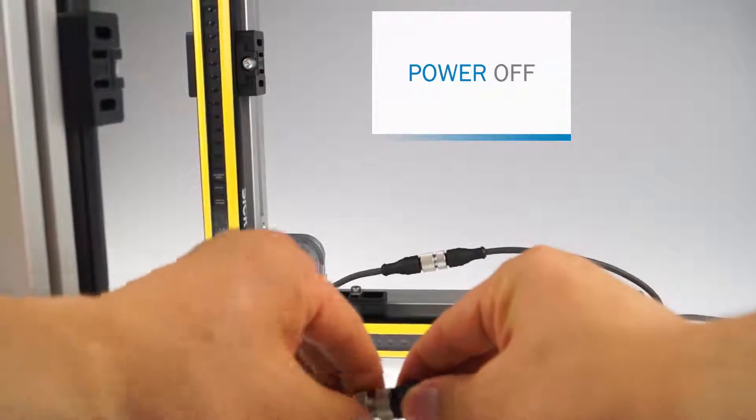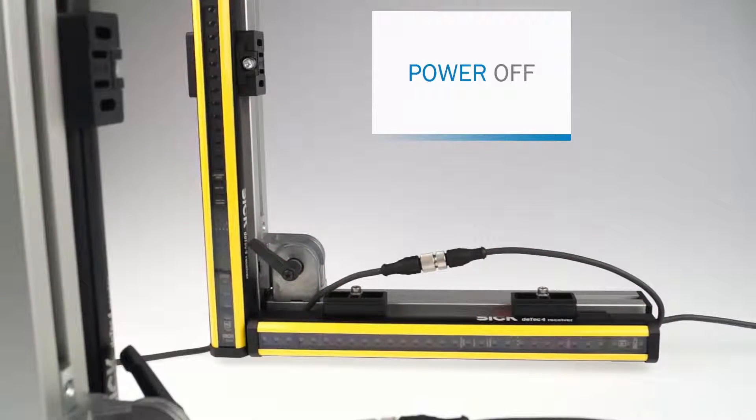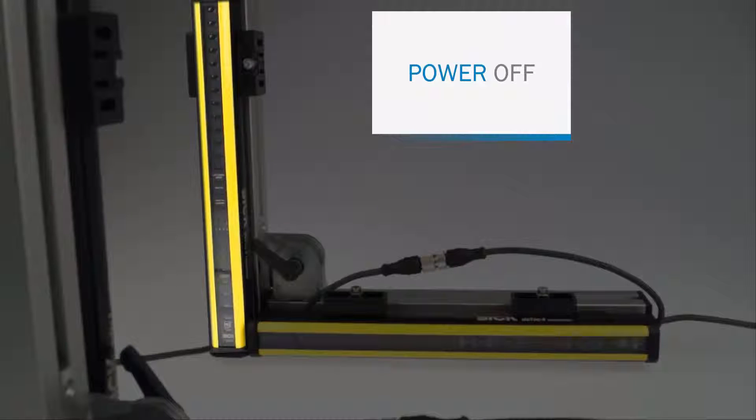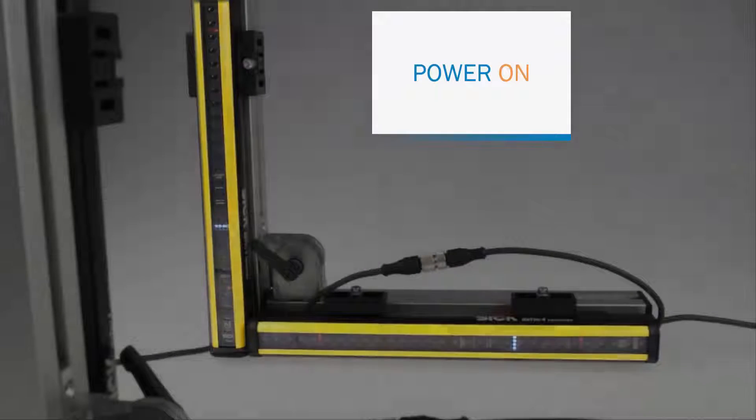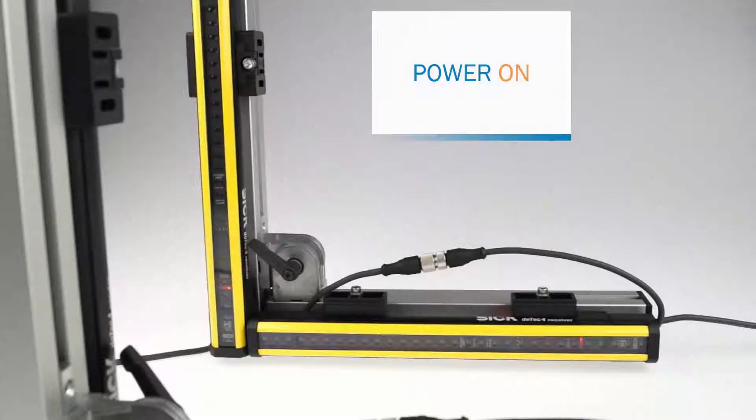If everything is wired correctly you can connect the system with the power supply again. The devices which are connected directly to the power supply represent the host devices while all other devices are guest devices. Now the field LEDs of the devices are flashing green. This is the sign that the devices have entered the configuration mode and the cascading has been successful.